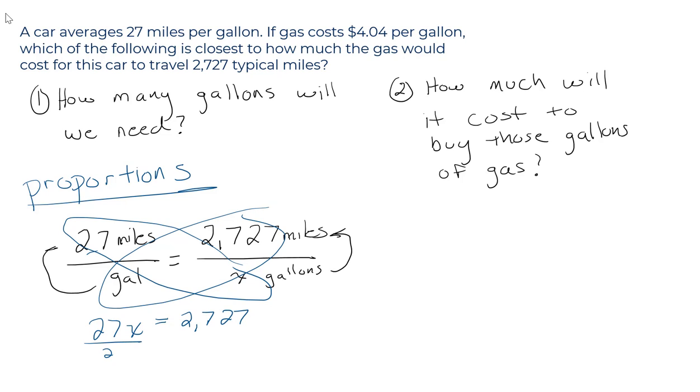We divide both sides by 27, and x equals 101, just as we had before. And then step two is the same.